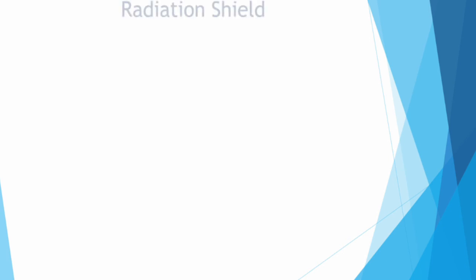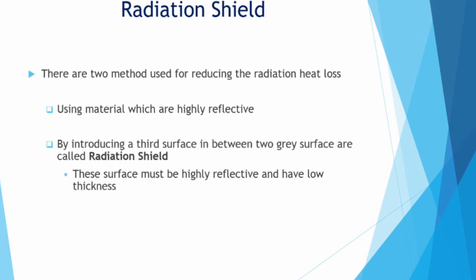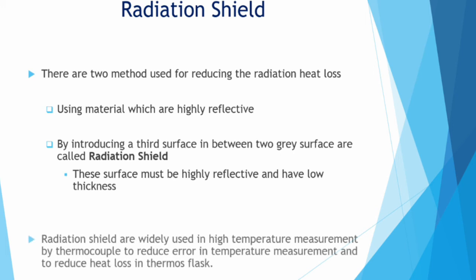Radiation shield. There are two methods used for reducing the radiation heat loss. First, using a material with high reflective surface. Second, introducing a third surface between two grey bodies, and this method is called radiation shielding. Radiation shielding is widely used in reducing heat loss in thermosflasks.